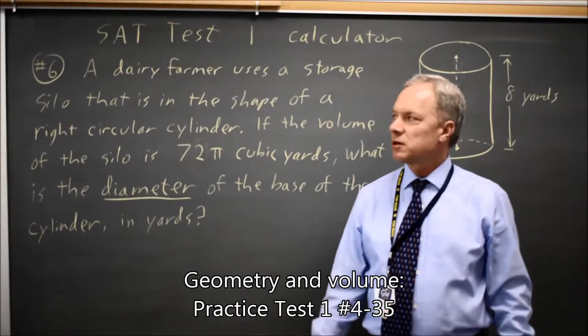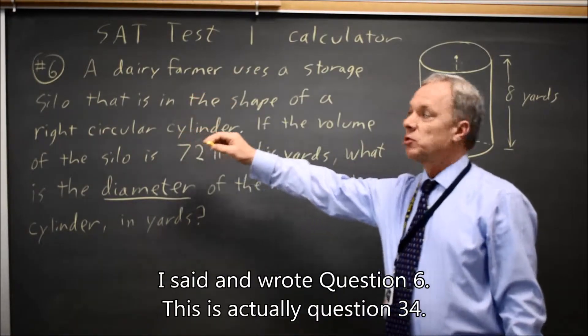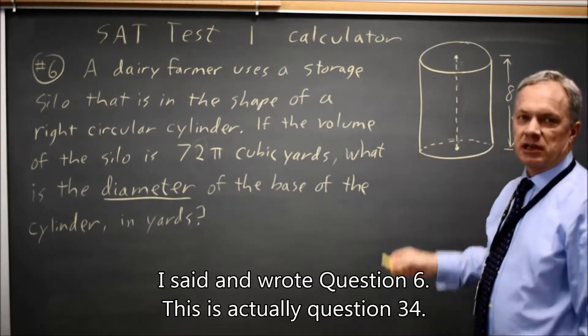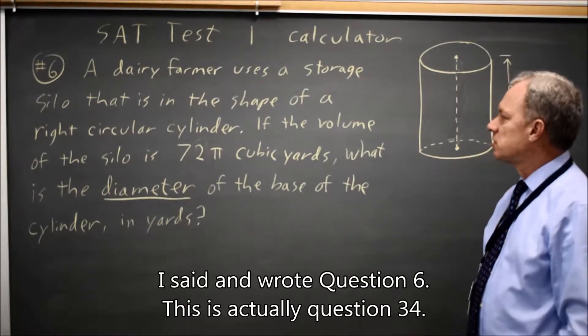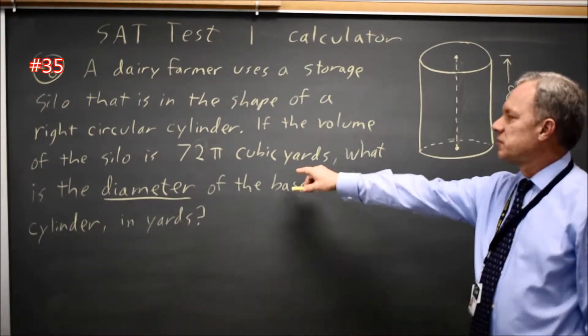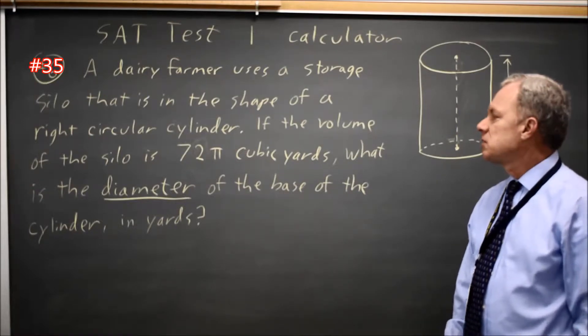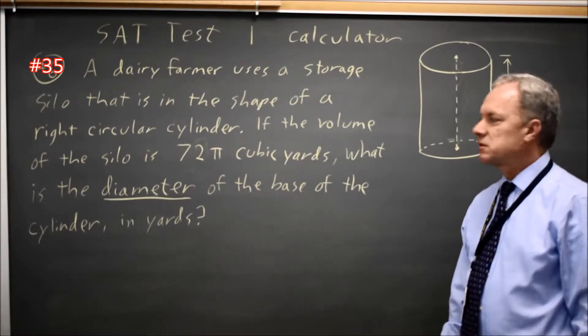This is SAT test 1, calculator question number 35. A dairy farmer uses a storage silo that is in the shape of a right circular cylinder. If the volume of the silo is 72 pi cubic yards, what is the diameter of the base of the cylinder in yards?